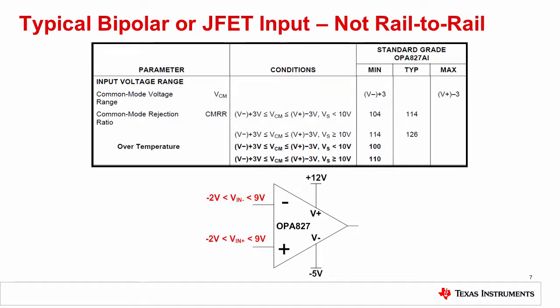Let's move on to the next topology, an op-amp with either a typical bipolar or JFET input stage, such as the OPA827. This amplifier has common mode limitations to both supplies. That is, the input voltage must remain several volts away from each supply rail. The example circuit at the bottom of the slide shows the input common mode range with asymmetrical supplies of plus 12 volts and minus 5 volts. In this example, the amplifier would not respond linearly if the input signal was below minus 2 volts or above 9 volts.